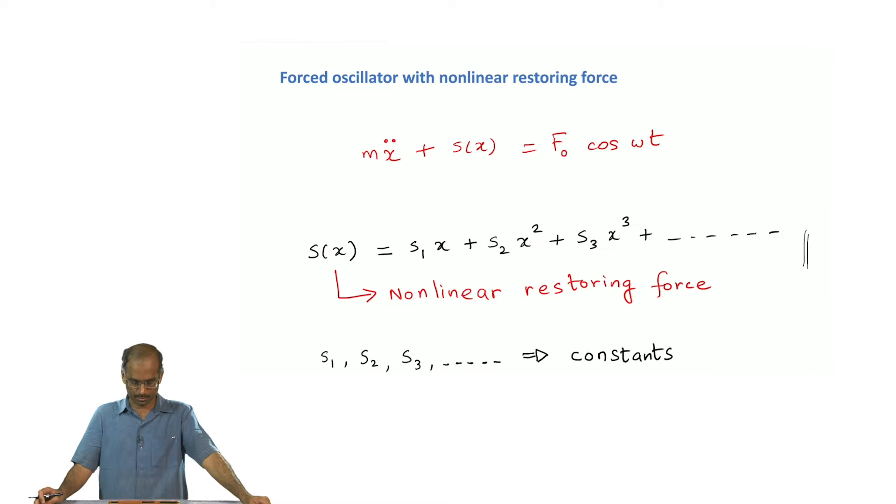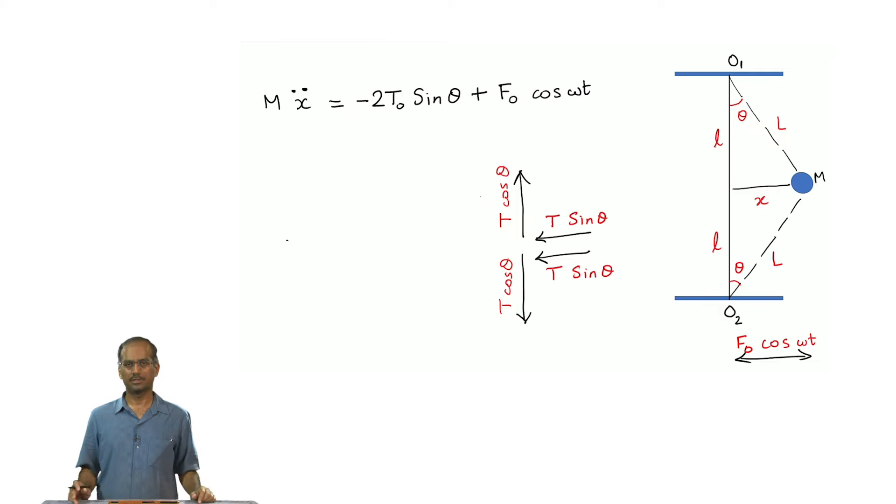Let us start by doing a quick recap of what we saw in the last one or two classes. We were looking at non-linear restoring force models which would give rise to oscillations. One of the simplest things that we did was to look at a model where you had a non-linear restoring force S of x and it was also driven. In principle this non-linear restoring force has infinite terms S1x plus S2x squared and so on, but in practice we restricted it to two or three. As an example we looked at this problem of beaded string.